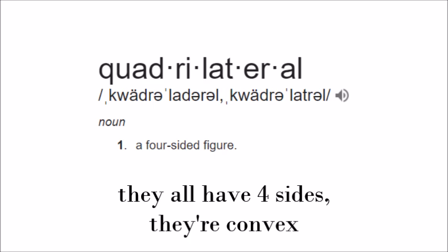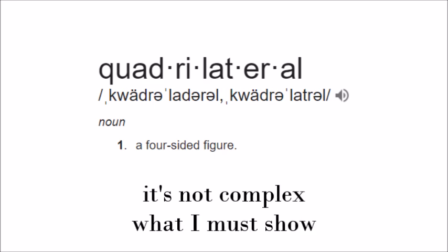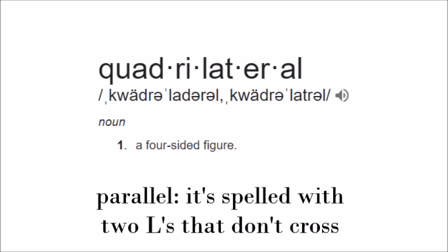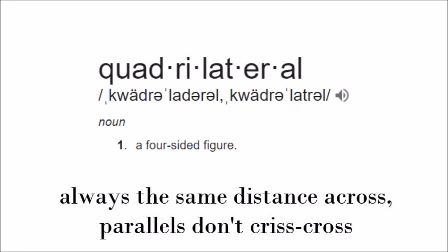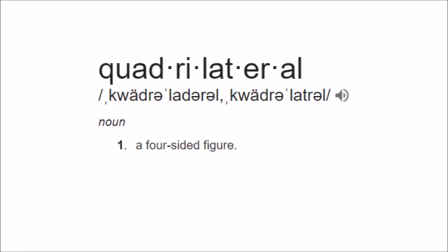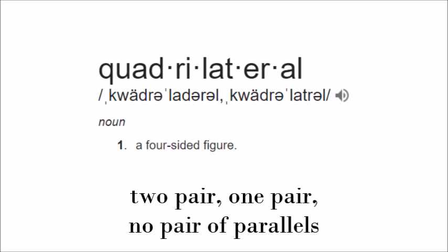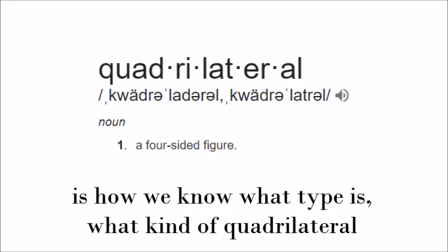They all have four sides. They're convex, not complex. Parallel is spelled with two L's that don't cross — always the same distance across. Parallels don't crisscross. Two pair, one pair, no pair of parallels is how we know what type it is.